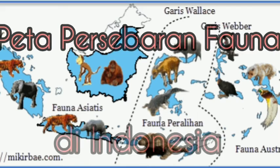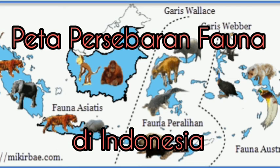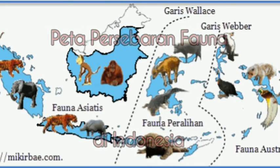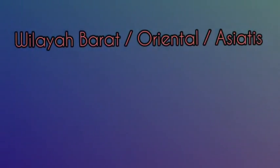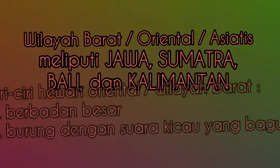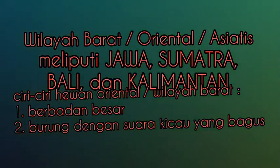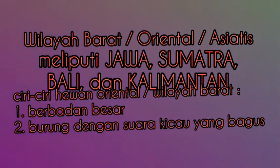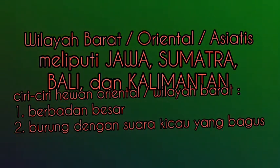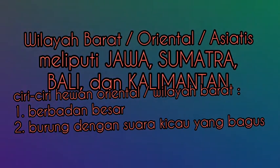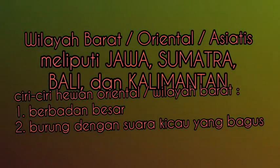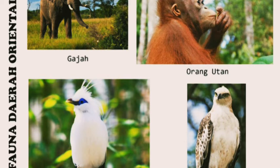Ini adalah beberapa contoh peta persebaran fauna yang ada di Indonesia. Di Indonesia ini beragam sekali fauna atau binatang. Yang pertama, di wilayah barat atau oriental atau asiatis, meliputi Jawa, Sumatera, Bali, dan Kalimantan. Ciri-ciri hewan di wilayah barat adalah: badannya besar, dan jika jenisnya burung, pasti memiliki suara kicau yang bagus. Ini adalah beberapa contoh fauna di daerah oriental atau wilayah barat.